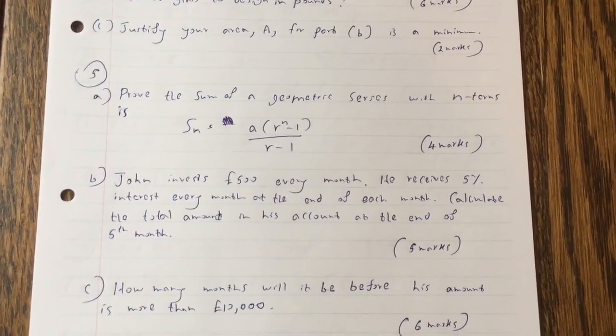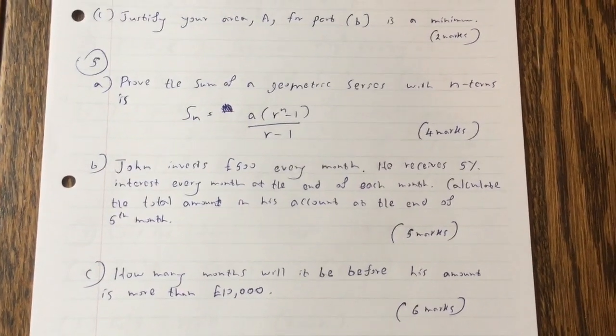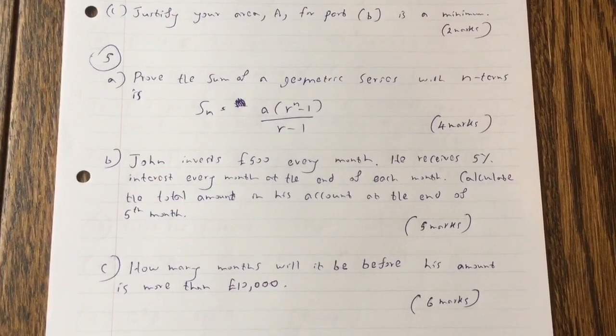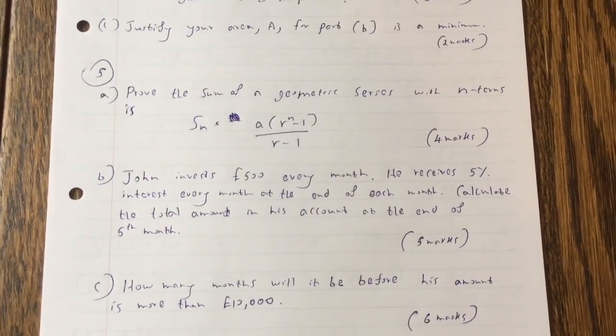Question 5. Prove the sum of a geometric series with n terms is S_n equals A bracket R to the n minus 1 over R minus 1.